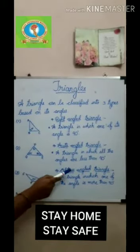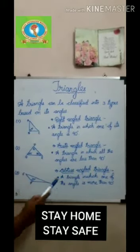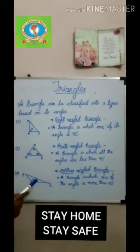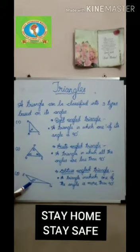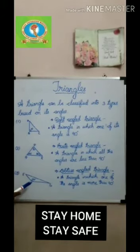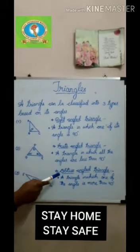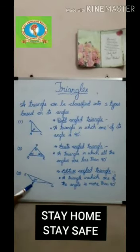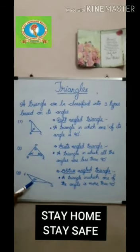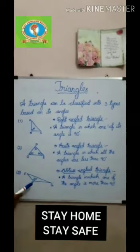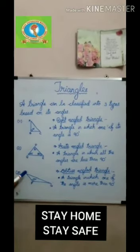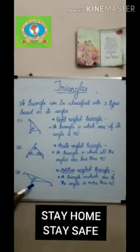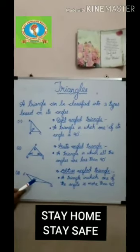Third, it is the obtuse angle triangle. A triangle in which one of its angles is more than 90 degrees is called an obtuse angle triangle. Here in triangle EFG, angle F is more than 90 degrees. So it is called an obtuse angle triangle.